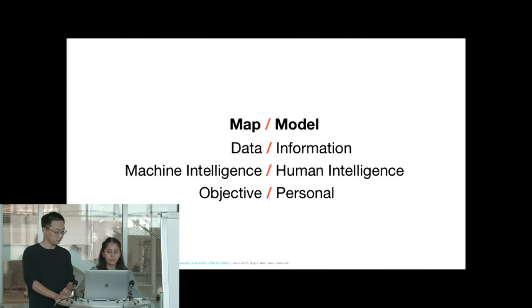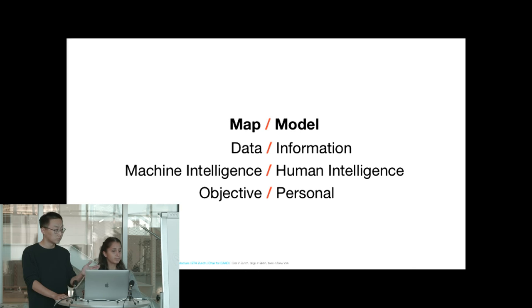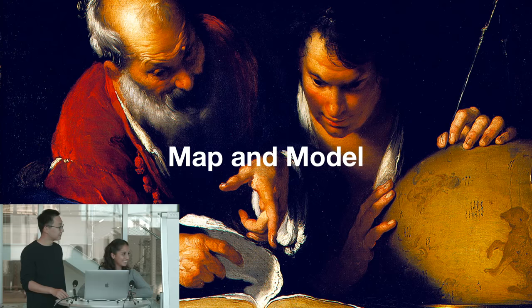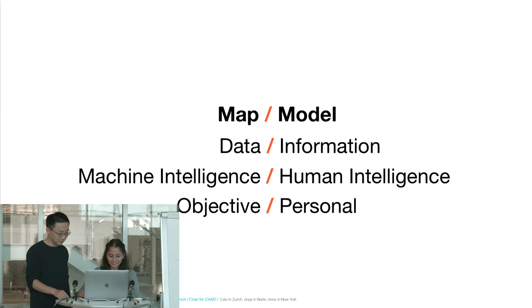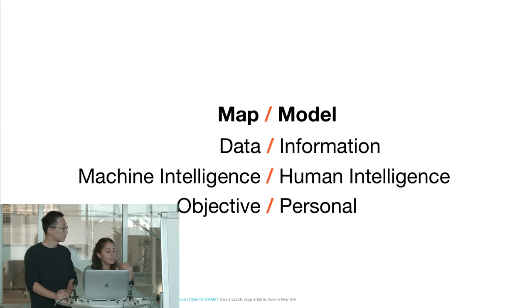We start by recalling the symmetries we have, and here we add one more: map and model. From the side of the map, we have data, machine intelligence, and its objective. From the side of the model, we have information, human intelligence, and personal.